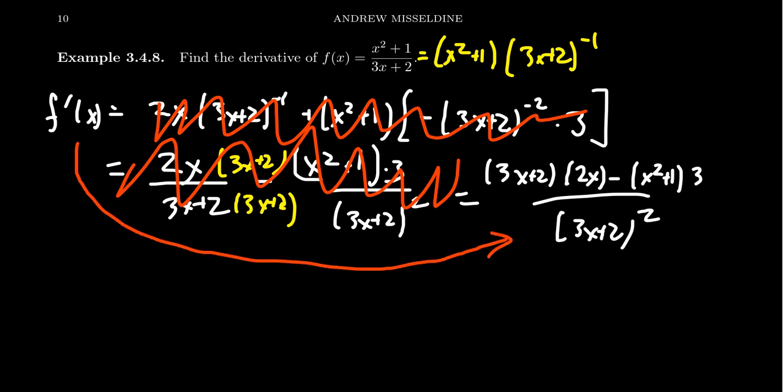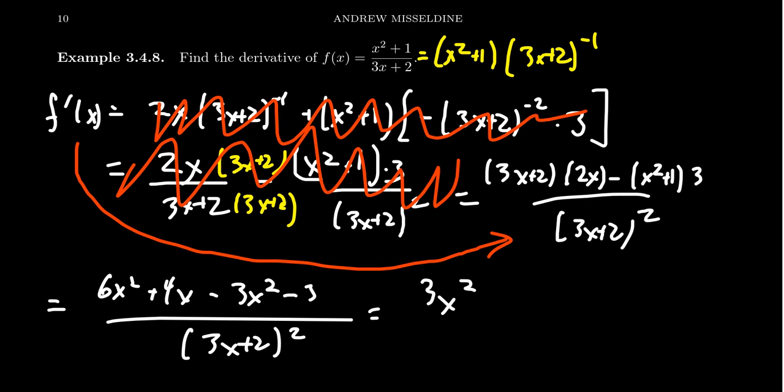So the point of memorizing the quotient rule is to simplify this calculation so that we can just start at this moment. And we end up with a 6x squared plus 4x minus 3x squared minus 3, all above 3x plus 2 squared. If we combine like terms, we get a 3x squared plus 4x minus 3, all on top of 3x plus 2 quantity squared, which is the same derivative.